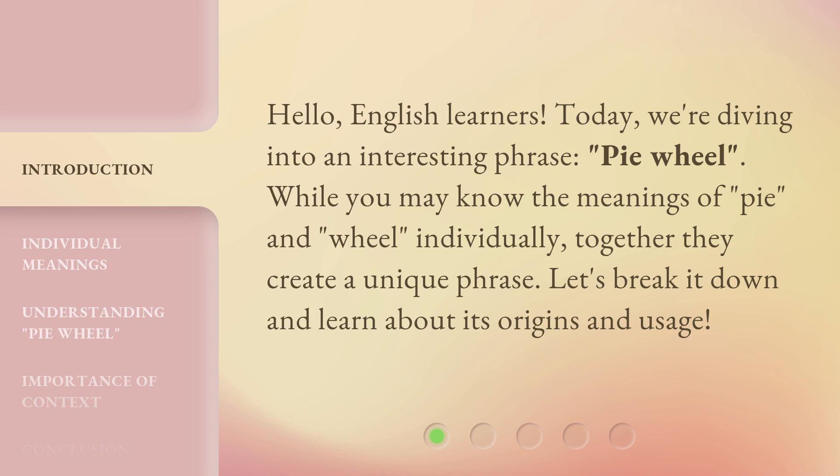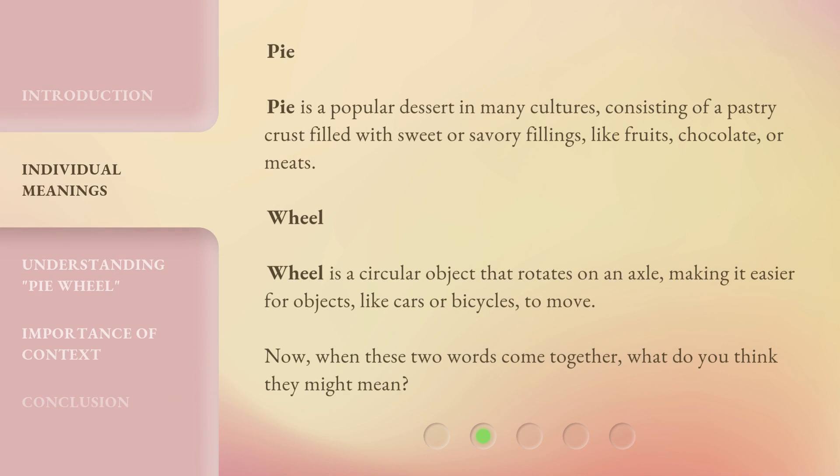Pie is a popular dessert in many cultures, consisting of a pastry crust filled with sweet or savory fillings like fruits, chocolate, or meats. Wheel is a circular object that rotates on an axle, making it easier for objects like cars or bicycles to move.